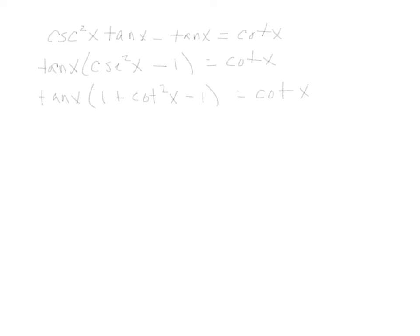And then we still have minus 1 equals cotangent x. Inside the parentheses, you can see the 1 minus 1 will cancel each other out. So we actually just have tangent x times cotangent squared x equals cotangent x. Back to the formula page, cotangent is reciprocal of tangent squared. So we could write this like this. We traded our cotangent squared in for 1 over tangent squared.